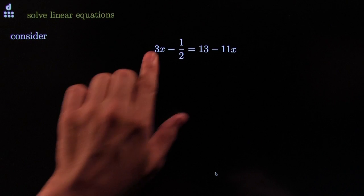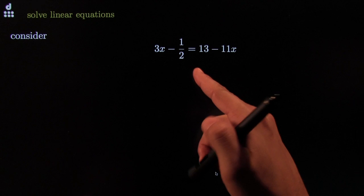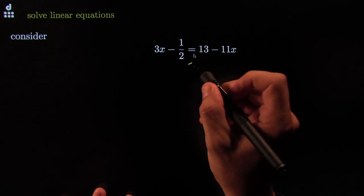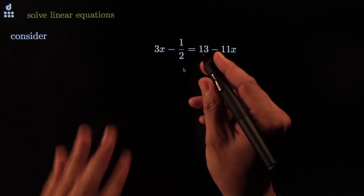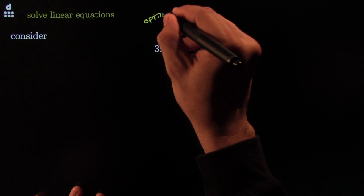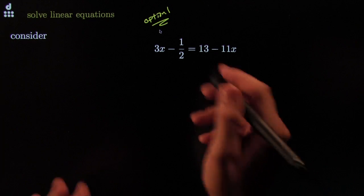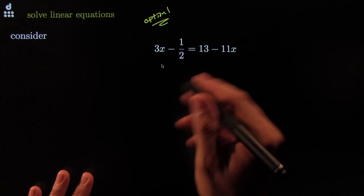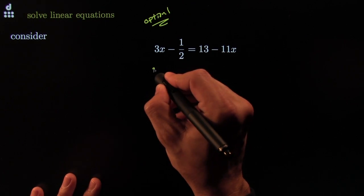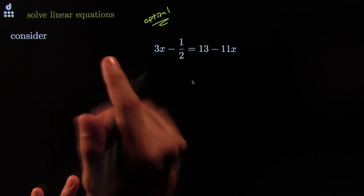Let's try another problem with x's on either side. There's an optional step here: if fractions bother you, you already have tools to get rid of them. I'll actually do it both ways to show how step 2 works. Let me leave some room. I'll set up: 3x plus negative one-half equals 13 plus negative 11x.